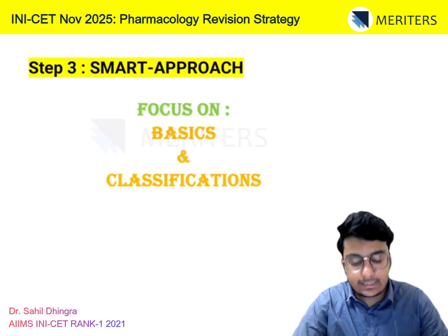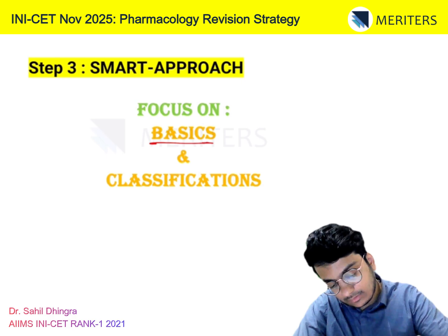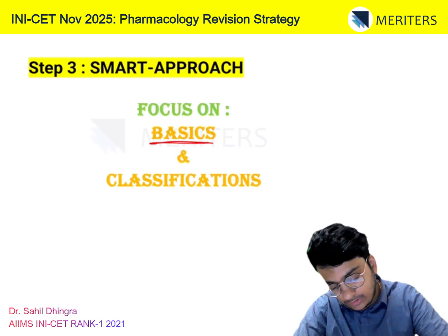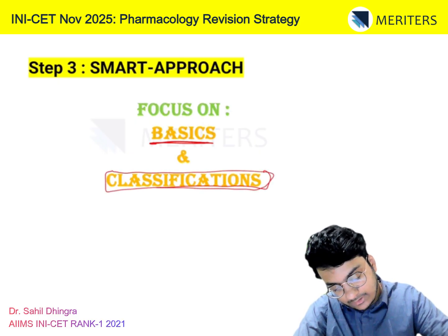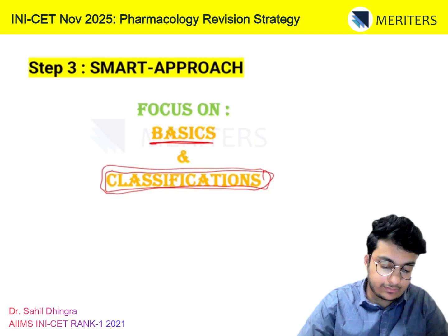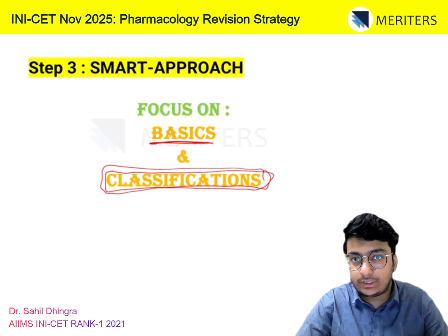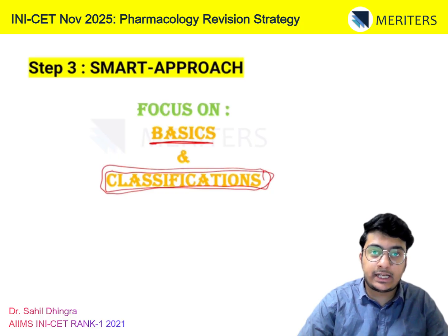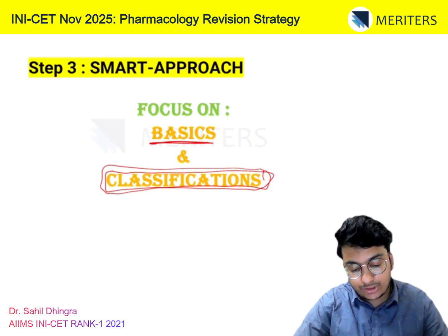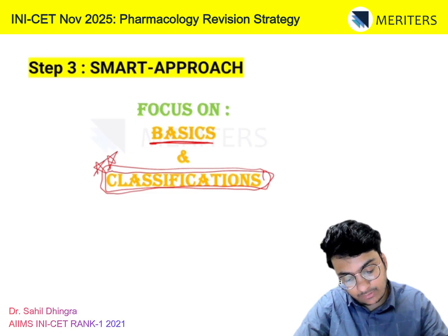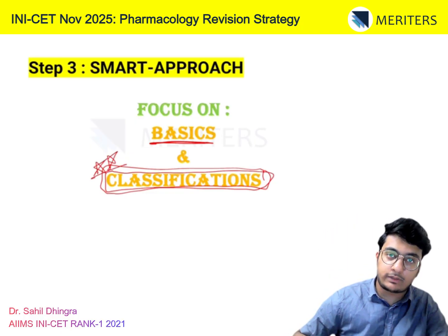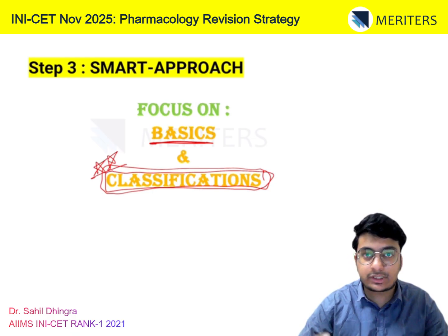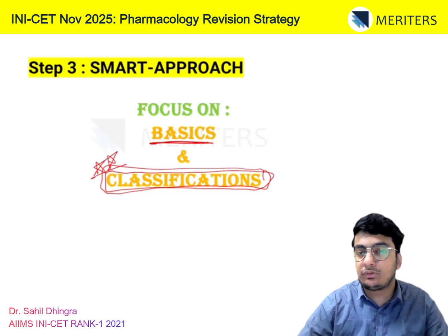In Step 3, study in a smart manner. The weightage for Pharmac is not as much as for core dental subjects like Ortho, Prostho, or Oral Surgery. In Pharmac, most questions are basic — like formulas for calculating half-life and drug classifications. Classifications are important for all chapters: ANS drugs (cholinergics, anticholinergics), CVS, GIT, and Respiratory. They will ask which drug is given for angina, which for arrhythmias — these are the basic questions.